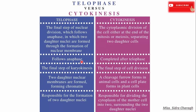Telophase follows the anaphase step and cytokinesis is completed after the telophase step. Telophase is the final step of karyokinesis and cytokinesis is the final step of cell division. In telophase, two daughter nuclear membranes are formed and chromosomes form chromatin, whereas in cytokinesis a cleavage furrow forms in animal cells and a cell plate forms in plant cells. Telophase is responsible for the formation of two daughter nuclei whereas cytokinesis is responsible for the division of cytoplasm of the mother cell surrounding the two daughter nuclei.